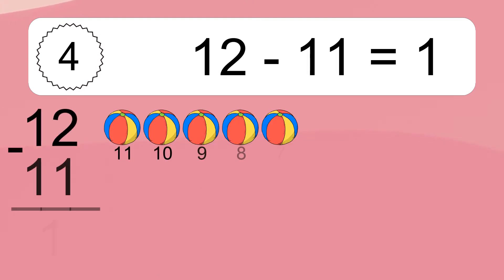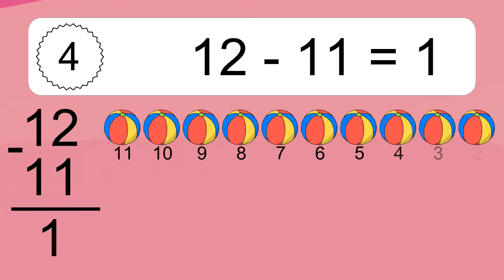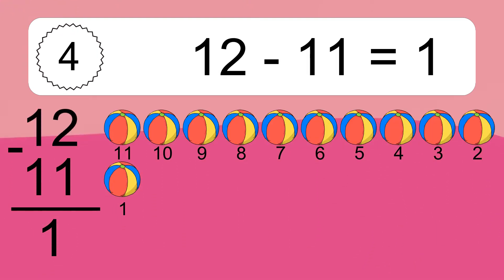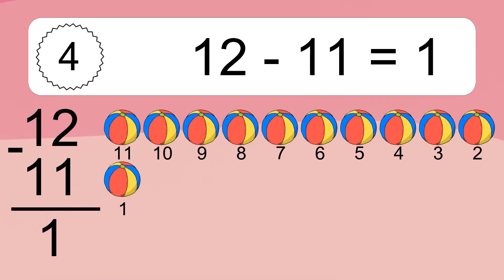12 minus 11 equals what? 12 minus 11 equals 1. Let's count it: 11, 10, 9, 8, 7, 6, 5, 4, 3, 2, 1.